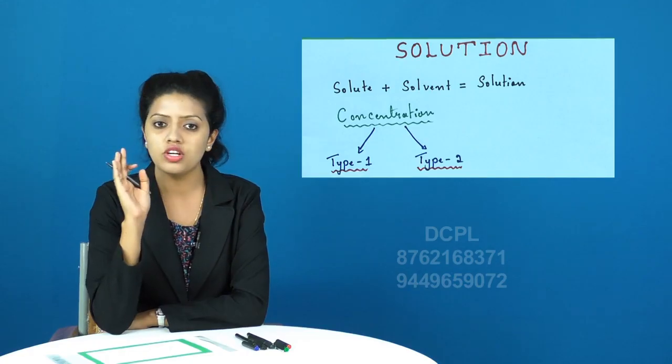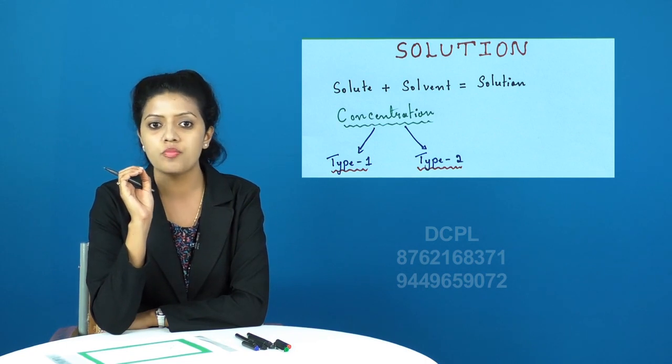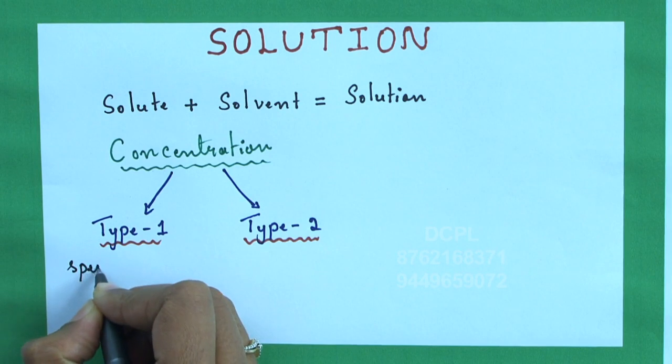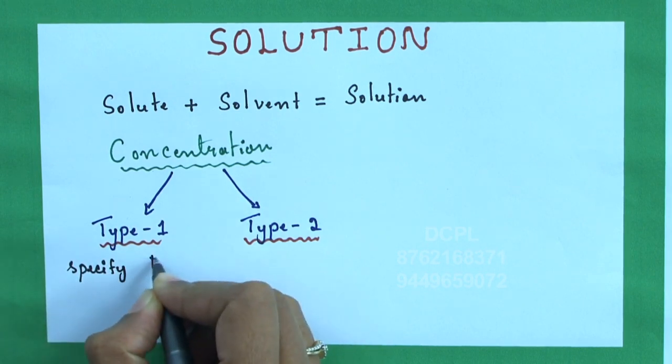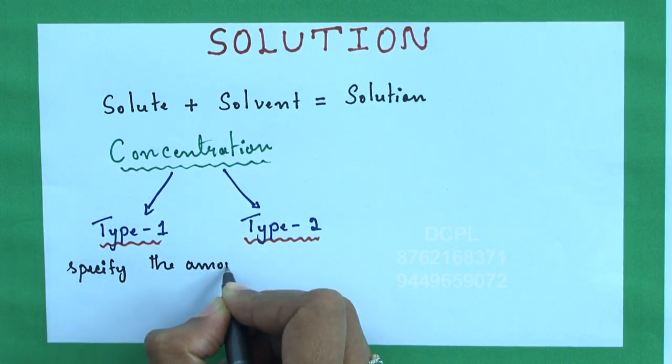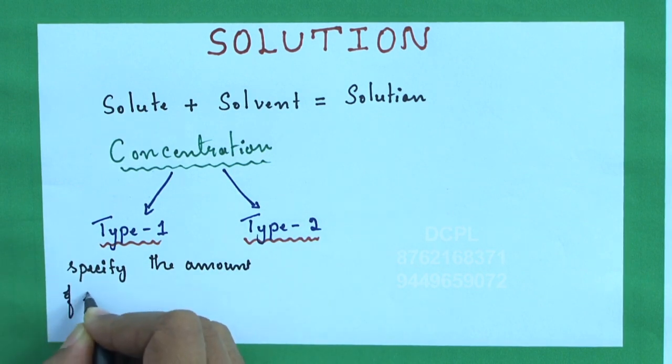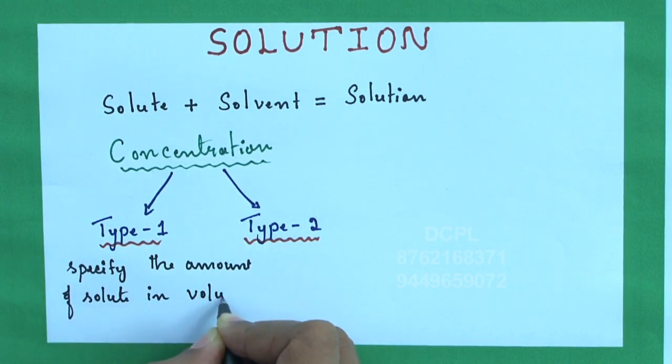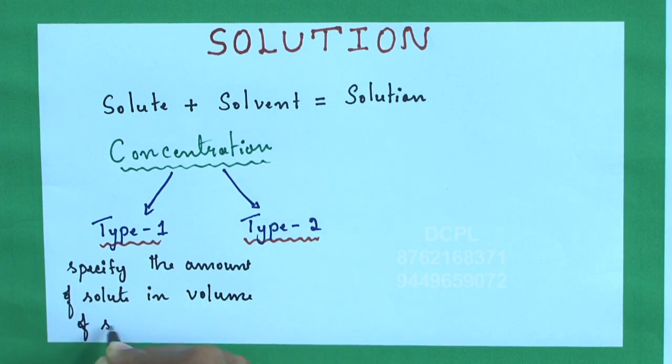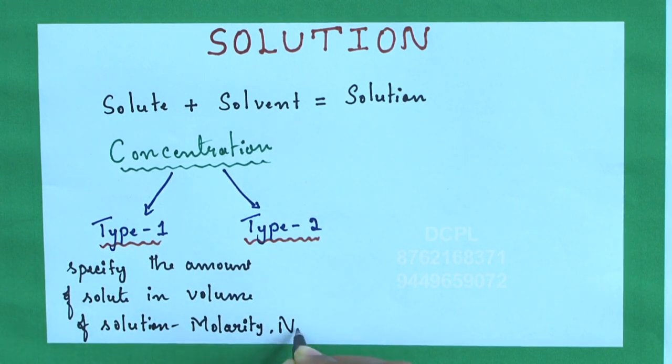Type 1 unit specifies the amount of solute present in a given volume of solution, such as molarity, normality, density, etc.